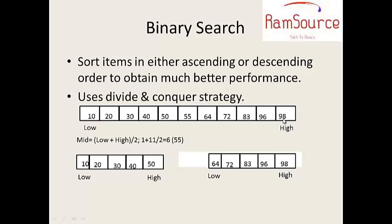Low is 1, high is 11. 1 plus 11 is 12, 12 divided by 2 is 6. The 6th element is 55. Counting: 0, 1, 2, 3, 4, 5 — the 6th element is 55. So, 55 is the middle element. Now we have the left side and the right side.